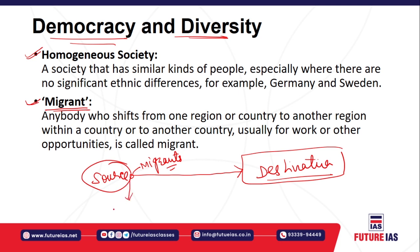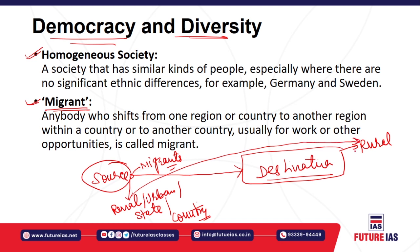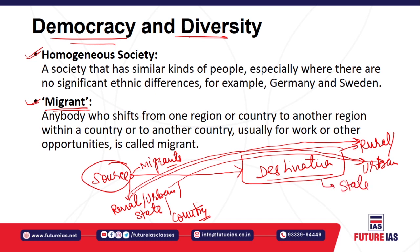The source region may be a rural or urban region within a country, or it may be a different state — say from Rajasthan to Andhra Pradesh — or even a separate country, say from India to the USA. The destination region may be rural or urban, and migration may be rural-to-rural, rural-to-urban, or urban-to-urban. Workers often migrate from less developing states to more developed states like Andhra Pradesh or Tamil Nadu, or internationally to Gulf countries or Western countries.